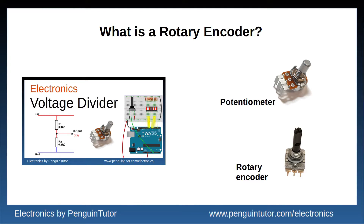In an earlier video I showed how a potentiometer can be used as a voltage divider — the further the dial was turned the higher the output — and this works well for some projects but it does have drawbacks. A potentiometer can usually only turn a set distance, typically 270 degrees, though some can move several full rotations. There's also an issue when using a potentiometer alongside an alternative input such as a web interface. The rotary encoder overcomes these limitations by providing a way of knowing which direction the encoder is moving relative to its current position.